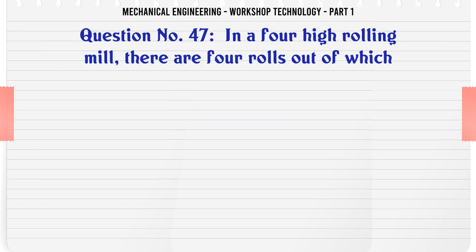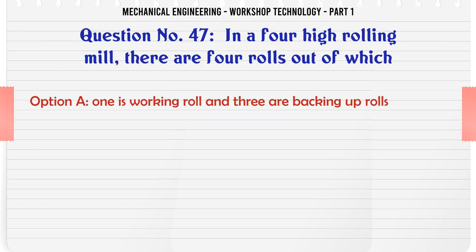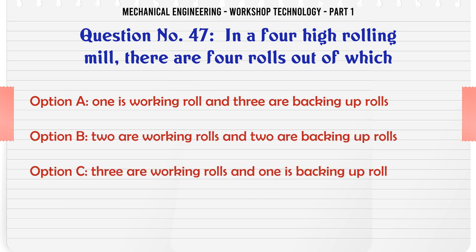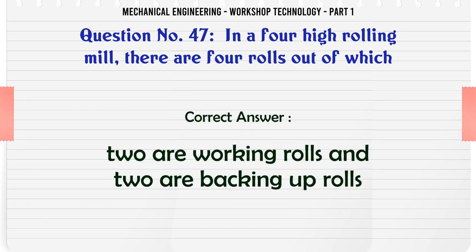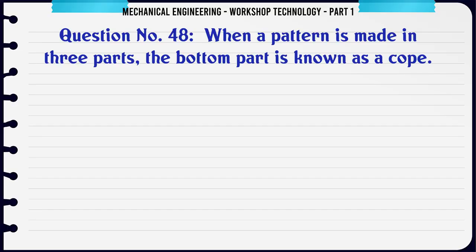In a 4-high rolling mill there are 4 rolls, out of which: A. One is working roll and 3 are backing up rolls. B. Two are working rolls and 2 are backing up rolls. C. Three are working rolls and 1 is backing up roll. D. All 4 are working rolls. The correct answer is: 2 are working rolls and 2 are backing up rolls.